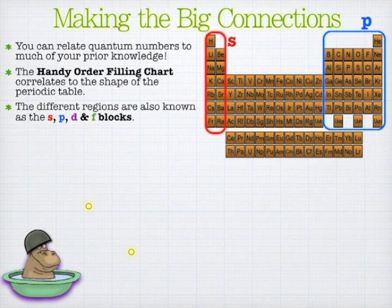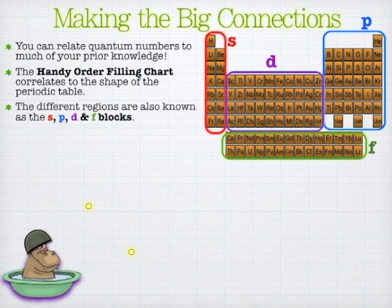Now technically the handy order of filling chart does go beyond F. There's G, there's H, there's I, for some reason they skip J, and then they go to K. But these subshells are only used when electrons get excited to higher states. So we really don't have to go beyond the F subshell for anything.